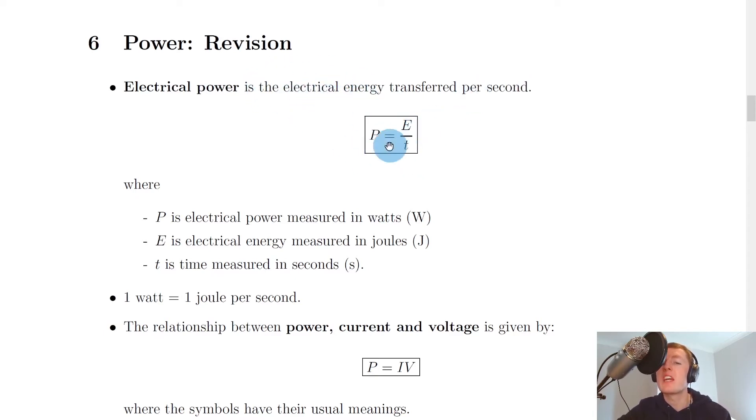So P = E/t, where P is the electrical power measured in watts (W), E is electrical energy measured in joules (J), and t is the time measured in seconds (s).